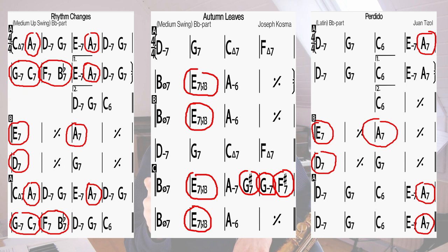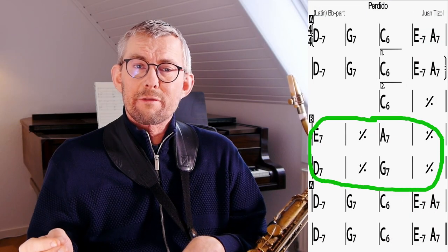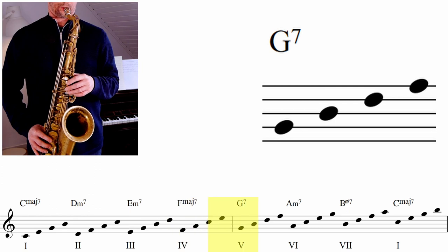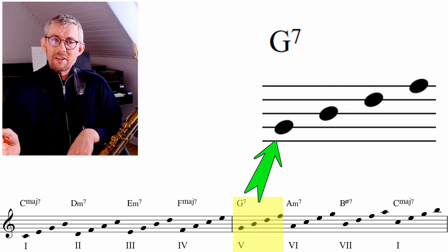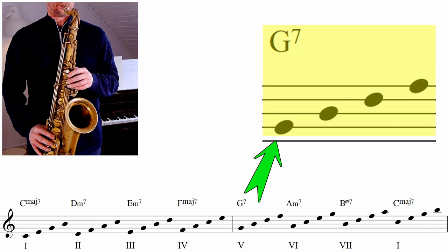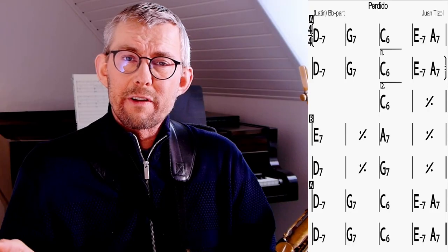And there are definitely exceptions. In Perdido the bridge have four different dominant chords. When you see a dominant chord it's a capital letter with a seven, and these dominant chords are all the fifth of one of the major scales. So we need to find out where the fifth belong.